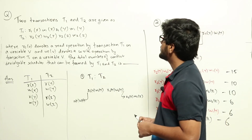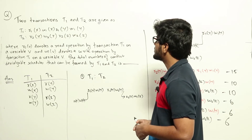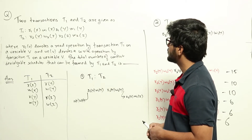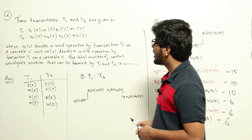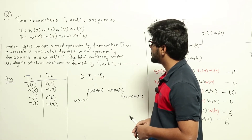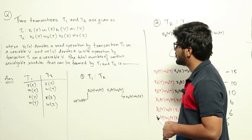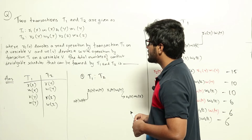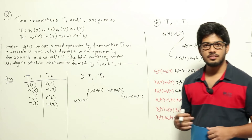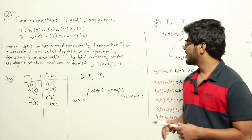Two transactions T1 and T2 are given: T1 performs R1(X), W1(X), R1(Y), W1(Y) and T2 performs R2(Y), W2(Y), R2(Z), W2(Z), where Ri(V) denotes a read operation by transaction Ti on variable V and Wi(V) denotes a write operation by transaction Ti on variable V. The question asks for the total number of conflict serializable schedules that can be formed by T1 and T2.